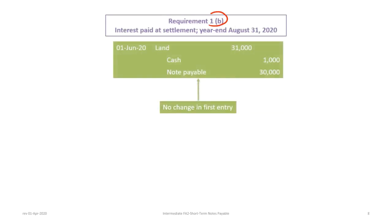Requirement 1B is a simple variation where interest is paid at settlement rather than monthly. No interest is paid monthly — it is all paid at the end. Remember, for this part, the year-end is August 31st, 2020. For the full set of entries, we start with the same purchase on June 1st: debit land for $31,000, credit cash for the $1,000 down payment, and credit note payable for $30,000.